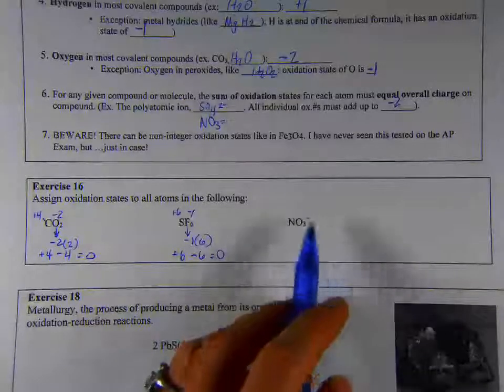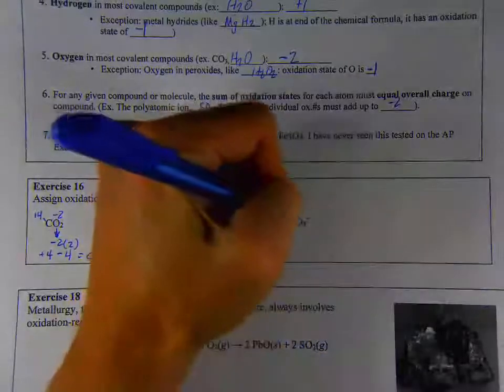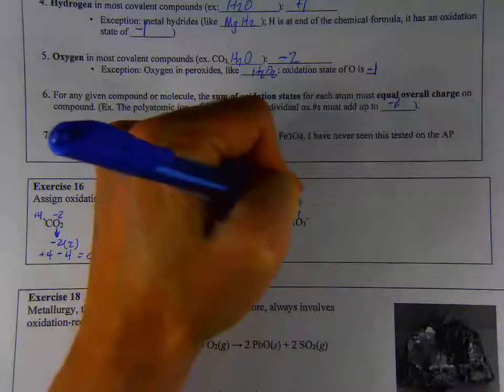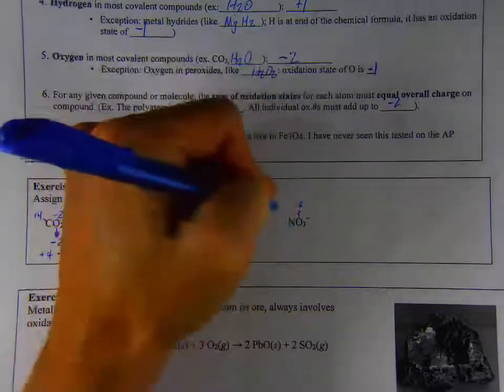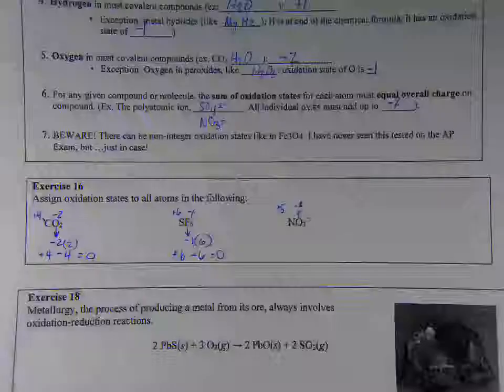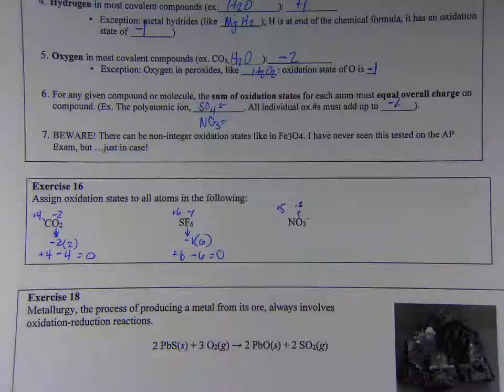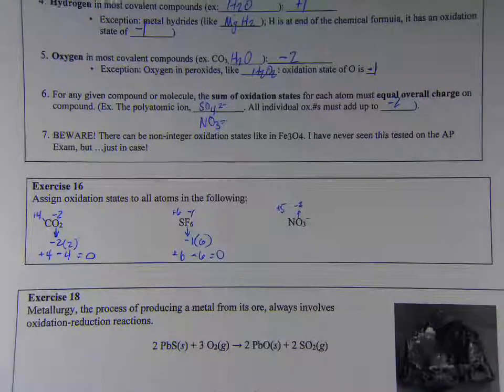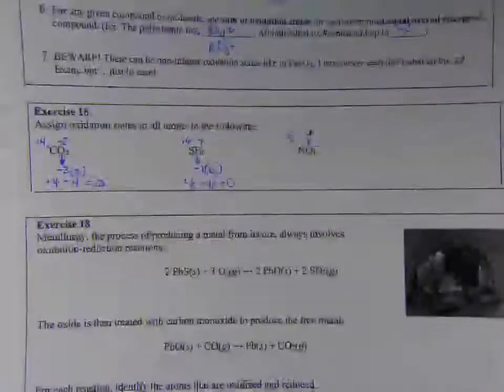So try that last one on your own. Hopefully you'll find out that oxygen has an oxidation state of negative two, and nitrogen has an oxidation state of plus five. Each of these oxygens has an oxidation state of negative two. And then the very last problem.